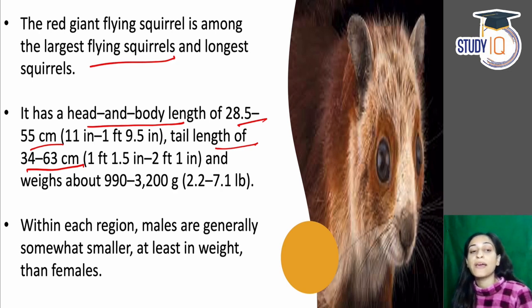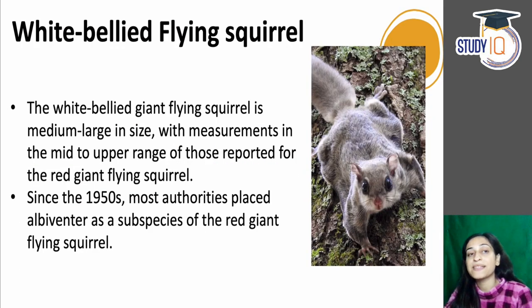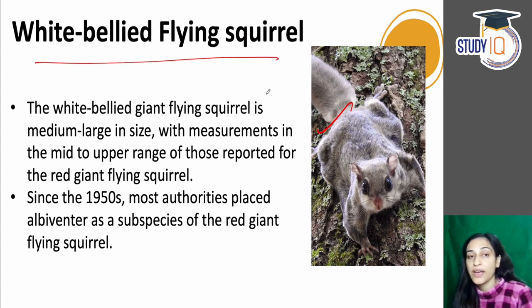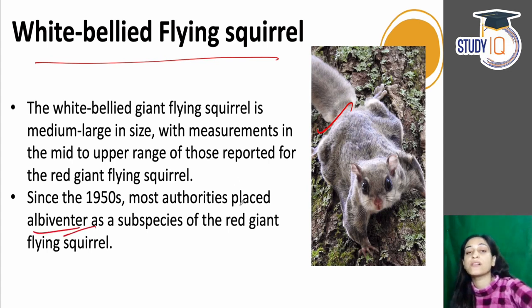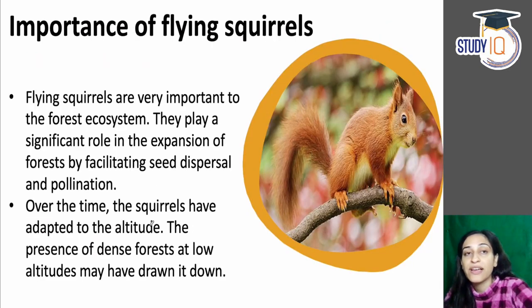In every region, males are smaller compared to females, at least in weight. Then there is the White-bellied Flying Squirrel, which is medium to large in size. Its subspecies is Albiventer. The Red Giant Flying Squirrel is another species — it is a distinct species.